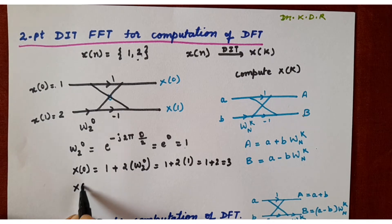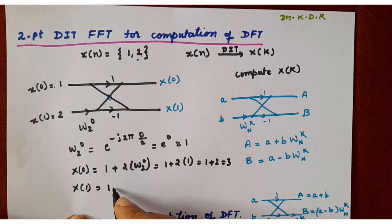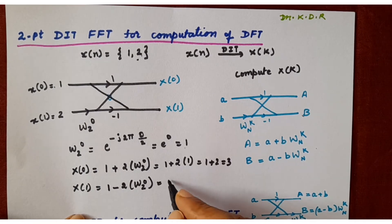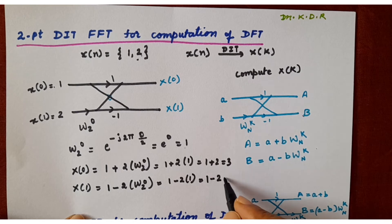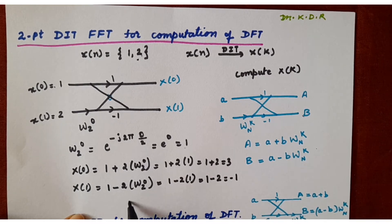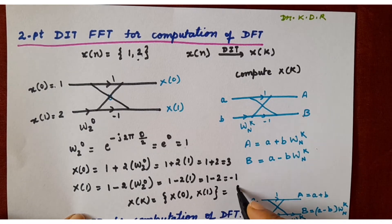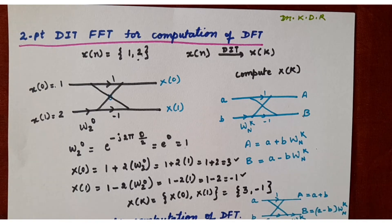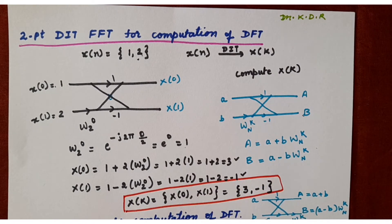Coming to capital X[1], its equation is A − B·W_N^K. A is 1, B is 2, and W_2^0 = 1, so it comes to 1 − 2·1 = −1. So what you get for capital X[K] is: X[0] = 3 and X[1] = −1, giving {3, −1}. This is your DIT result.